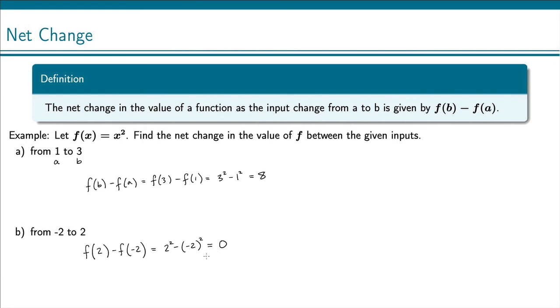Now this doesn't mean that the function doesn't do anything between negative 2 and 2. It just tells us that it ends up at 2 in the same spot that it was at negative 2. The net change just takes into account starting and ending and doesn't really care about anything in between.